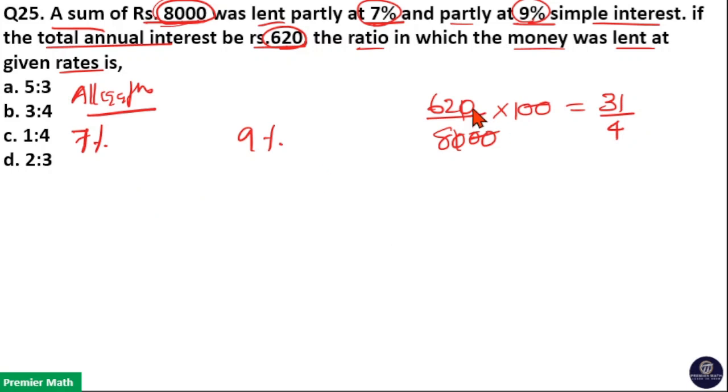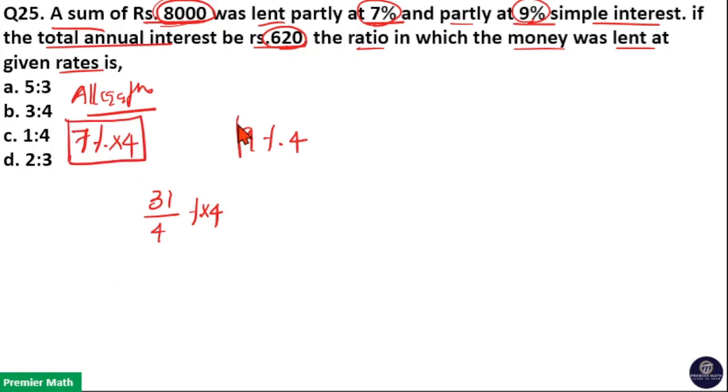The Rs.620 is 31 by 4 percentage. Write it in the middle. Now to cancel this 4, I will multiply it with 4. Then I should multiply 7 and 9 percentage with 4. This is 28 percentage, this is 36 percentage and this is 31 percentage.